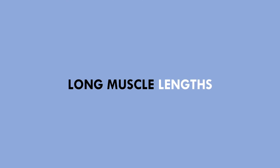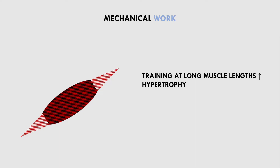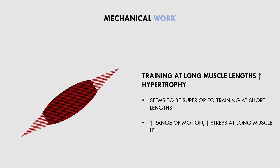Another mechanism that may be at play here is training a muscle at long muscle lengths. It seems that when we perform dynamic contractions against resistance at longer muscle lengths, there seems to be a more hypertrophic effect. For example, we would likely see greater muscle growth of the gastrocnemius performing a standing calf raise versus a seated calf raise. If we lift with a greater range of motion, we are training the muscle at a longer length in the stretched position, which is probably inducing more hypertrophy.